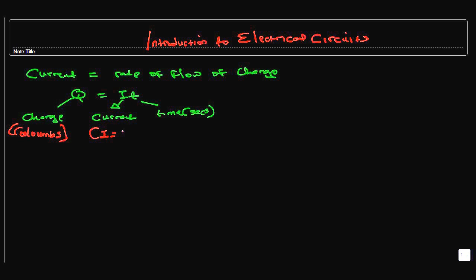Current is measured in amps, or you can call it amperes if you've got time to pronounce the whole thing. And time is measured in seconds.